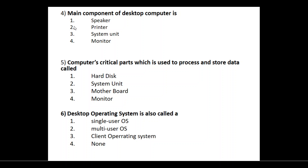Which is the main component of desktop computers? The options are speaker, printer, system unit, and monitor. The computer's critical part used to process and store data — among hard disk, system unit, motherboard, and monitor — the answer is system unit, option 2.